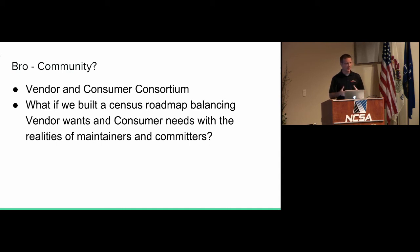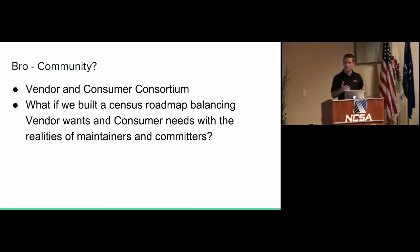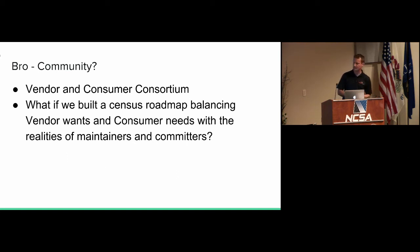What we're asking for is a vendor and consumer consortium — coming together to figure out how to solve some of these problems, decide how to fix things or at least talk about them. A consensus roadmap that balances vendor wants and consumer needs. How do we balance the time and pain of maintainers and committers with all the above? That's the dialogue we'd like to start. Visit us after, or find me on Twitter and email.